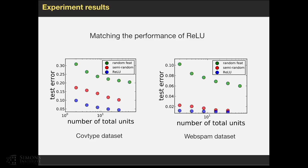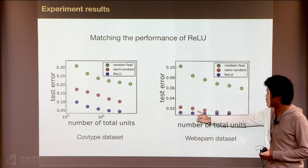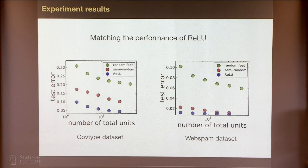Next, we're going to show some experiment results. We see these semi-random features are not as flexible as ReLU, but we can use slightly more units to match the performance of ReLU. These are the experiment results on two datasets. The blue dots are the ReLU, the red dots are the semi-random features, and the green ones are the fully random features. As we can see, using only slightly more units, it can match the performance of ReLU, but compared with random features, random features require many more units.